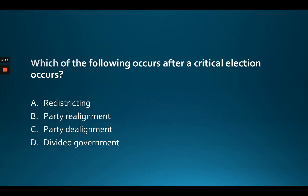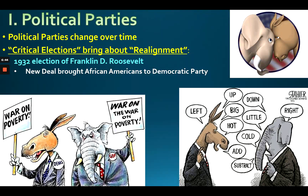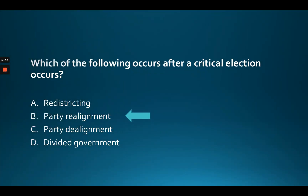Which of the following occurs after a critical election? The answer is B: party realignment. That's when a party changes its stance on major issues and people change the way they vote. You need to know about realignment. Redistricting is something different — that's when they redraw congressional district lines every 10 years.